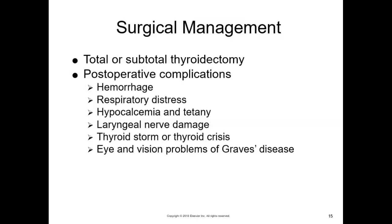Teach the patient deep breathing exercises and instruct them to support the neck when coughing or moving by placing both hands behind the neck to reduce strain on the incision. Inform them that they may be hoarse for a few days because of the endotracheal tube. In the operative procedure, whether a minimally invasive or open approach, the parathyroid glands and recurrent laryngeal nerves are carefully avoided to reduce the risk for complications and injury.